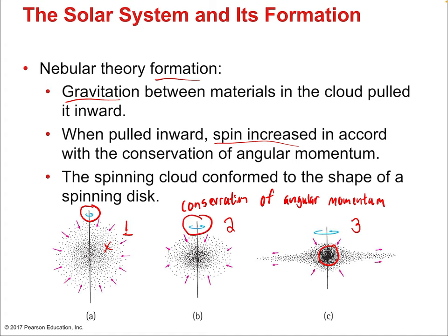As the cloud condenses, it spins faster and faster. The spinning cloud conformed to the shape of a spinning disk. The originally spherical cloud condensed into a disk over time — not due to gravity exactly, but due to the probability of collisions. As things bump into each other while spinning in a certain direction, the most probable outcome after collisions is to continue spinning in that direction, in the plane of rotation. It becomes a disk — starts as a sphere, becomes a disk.